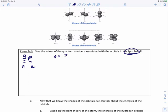So right off the bat, we know since we're dealing with 3P, N has to be 3, and L, since it's P, has to be 1.